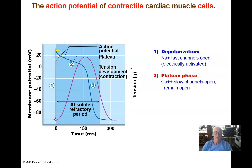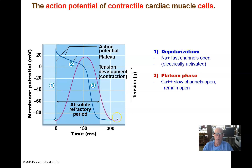Those calcium channels let positive charges into the cell, keeping it depolarized — this is called the plateau period. The cell stays depolarized, lots of calcium inside, it's contracting all the while. So the heart is contracting and doing work throughout this plateau. Then finally those calcium channels close, potassium slow channels open, and repolarize the membrane as potassium ions leak out of the cell. That's the action potential in a cardiomyocyte — repolarization due to potassium channels opening.